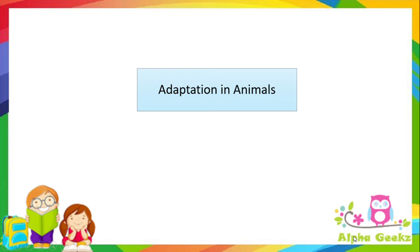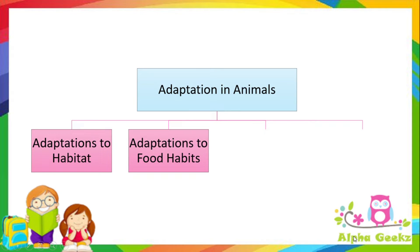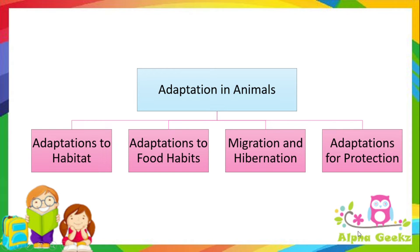Adaptation in animals is further classified into: adaptations to habitat, adaptations to food habits, migration and hibernation, and adaptations for protection.